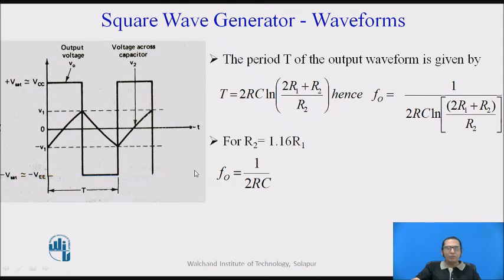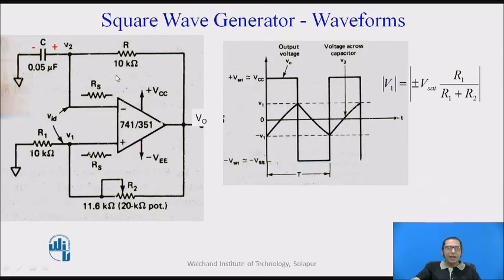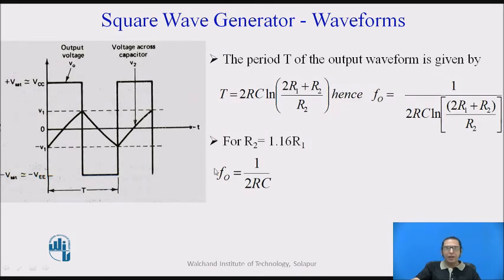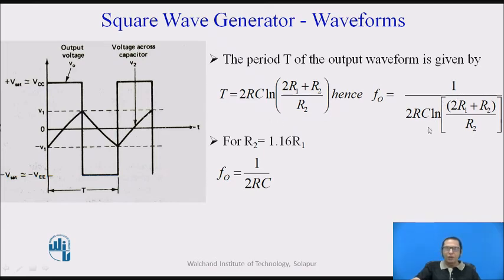The period of the square waveform is determined by the capacitor C and resistor R involved in the charging and discharging. The period is given as: T = 2RC × ln((2R1 + R2) / R2). The frequency is the reciprocal of the time period, given by: F0 = 1 / (2RC × ln((2R1 + R2) / R2)).